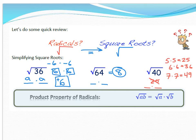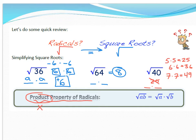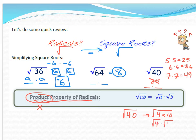The purpose of today is figuring out how to simplify a radical like √40, given that it's not a perfect square like 25, 36, or 49. The main property we'll use is called the product property of radicals. 'Product' means multiplication. So for radical 40, I can think: what two numbers multiply to give me 40? That's 4 times 10. The product property says √40 = √4 × √10.